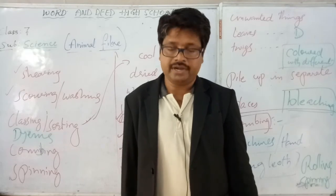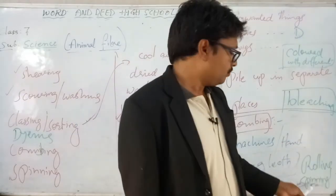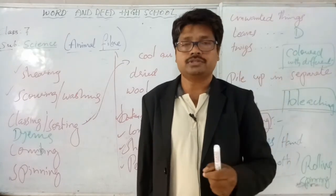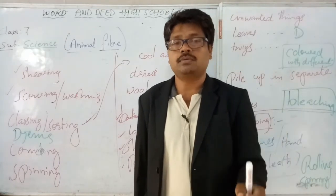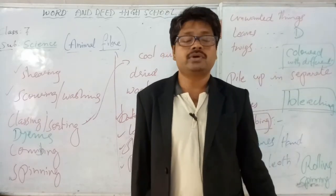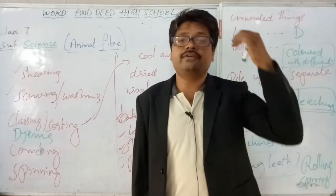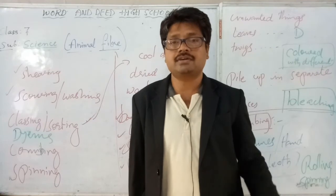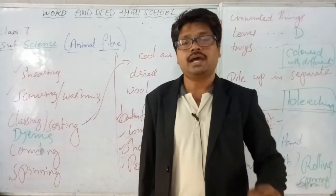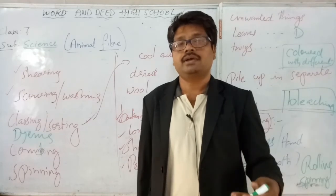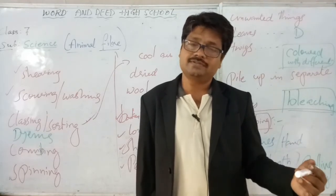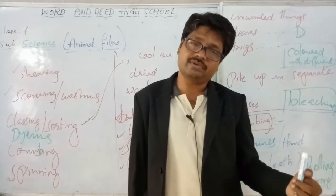Making woolen thread is also called the whirling spool process. After it is made into a thread, the thread is used to make different woolen fabrics. How woolen fabrics are made we will see in the next class. This is all for today — thank you for listening.